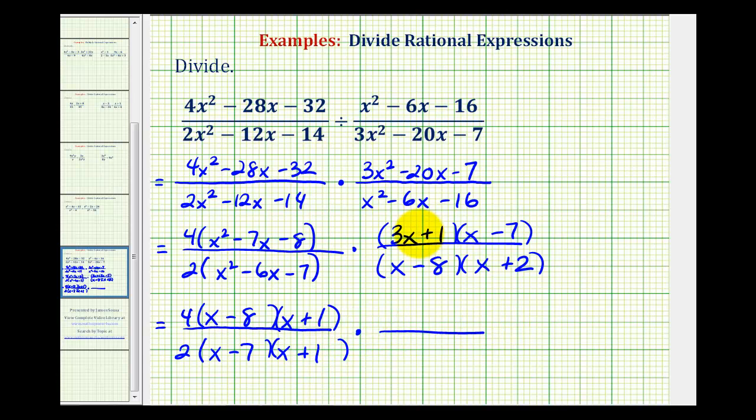Second fraction stays the same. 3x plus 1 times the quantity x minus 7. And then we have x minus 8 times x plus 2.